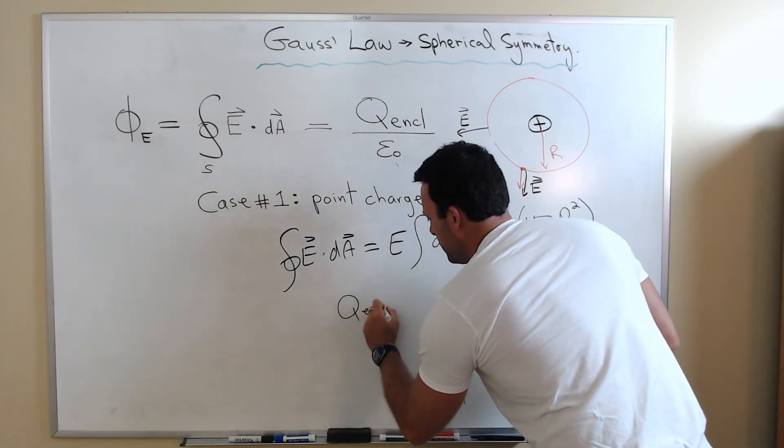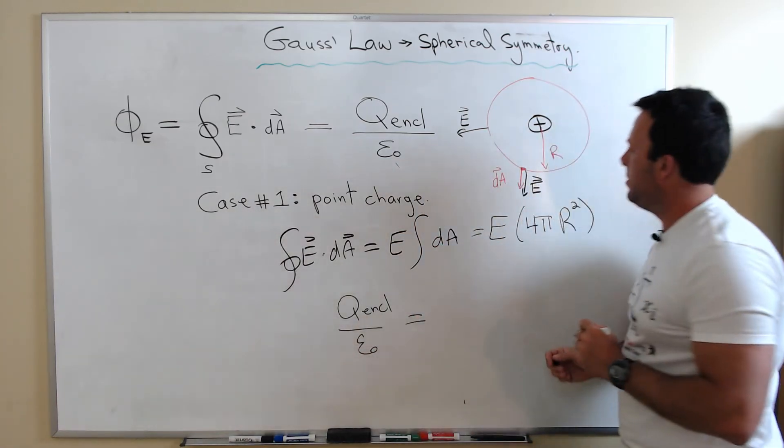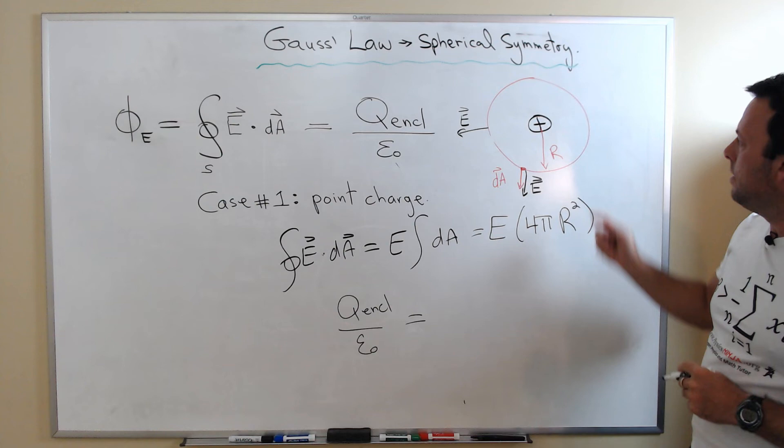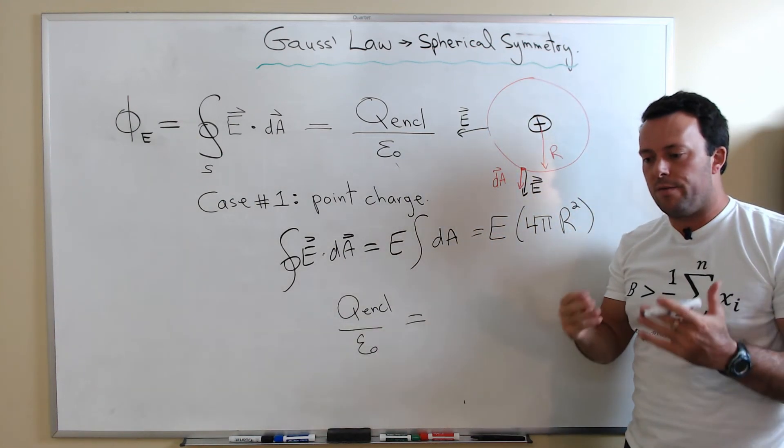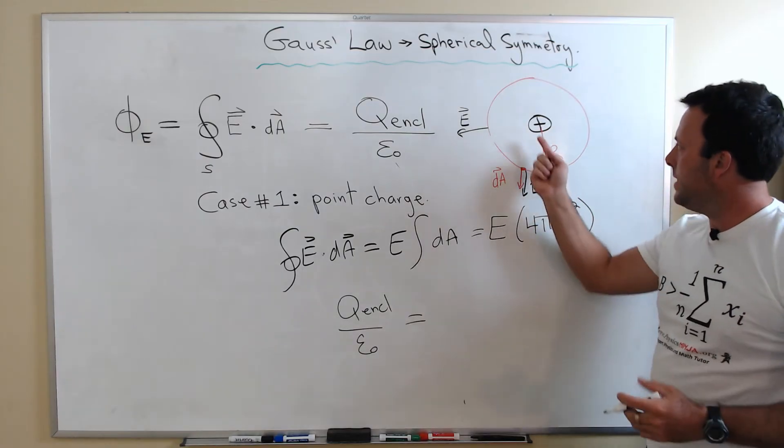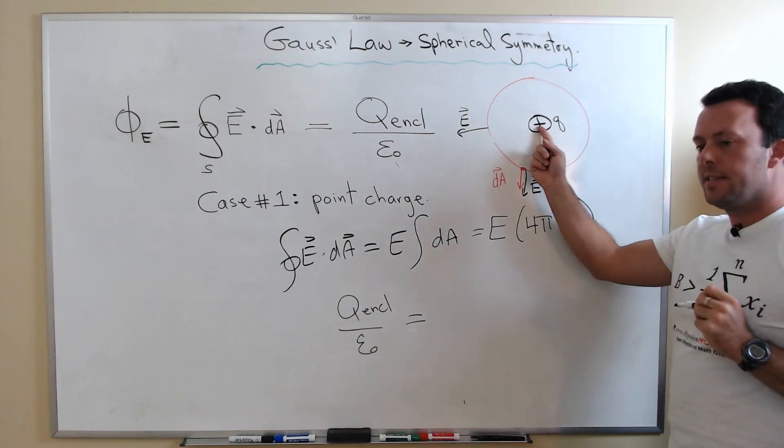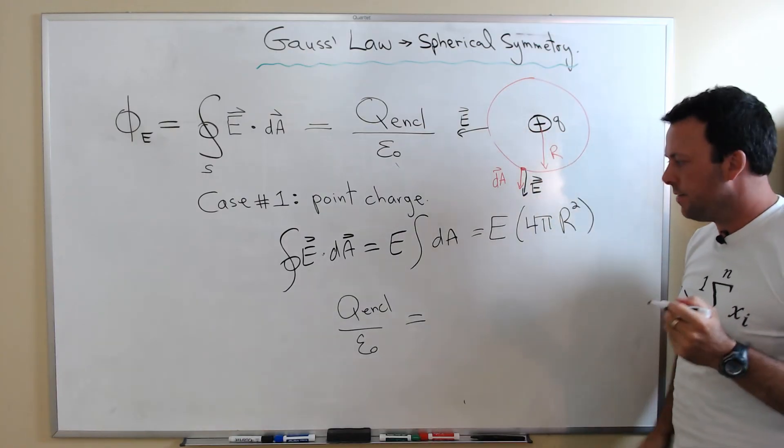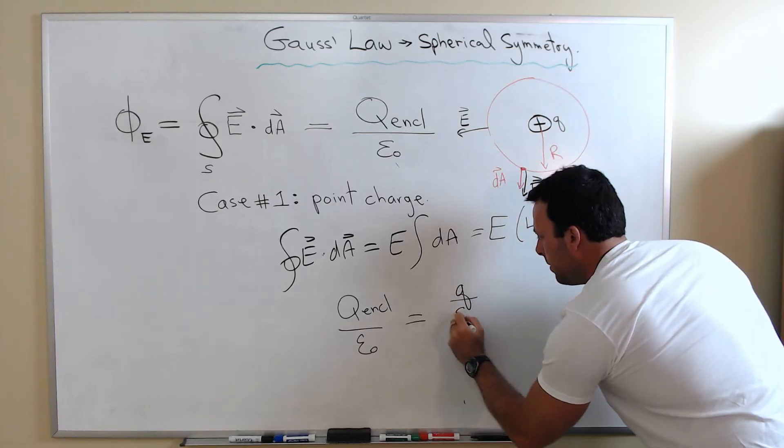So Q enclosed divided by epsilon zero. How much charge is enclosed by our Gaussian surface? Well, here's the surface - all we have to do is just count the number of charges that are inside that surface. So if I only have a single point charge Q inside that surface, the charge enclosed is simply Q divided by epsilon zero.